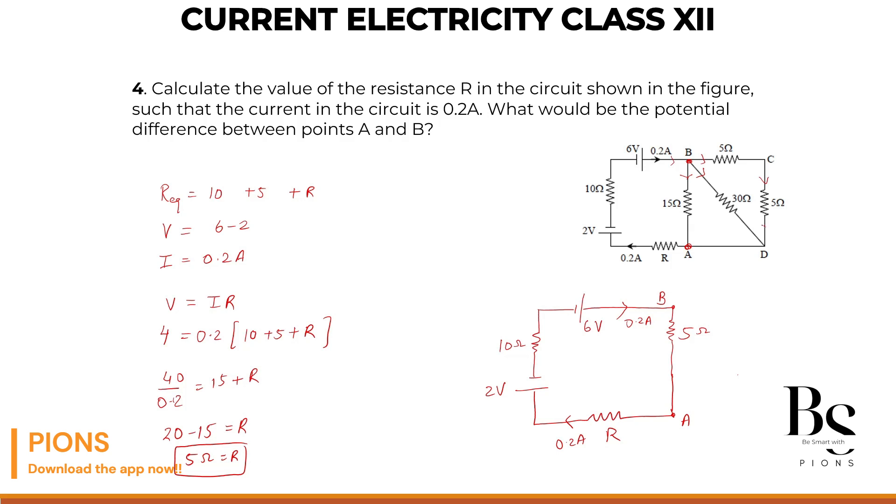And these two will again recombine and go like this. And again, 0.2 again, right? So what is our current across this whole branch? Sir, across this whole branch, our current is 0.2, right? 0.2 ampere.